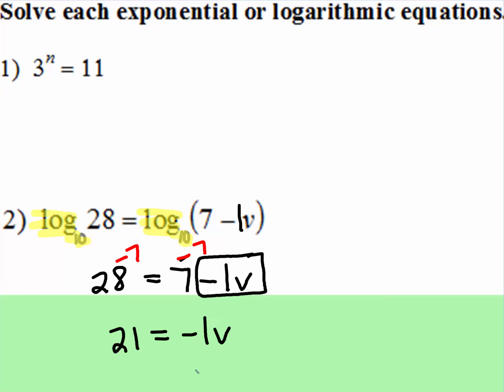Well, now I can get this by itself. Well, that's a positive 7. So I'm going to subtract 7 on both sides. And that leaves me with 21 is equal to negative 1v. Well, we're just going to divide both sides by negative 1. And that's v is equal to negative 21. And then you would need to type that in to make sure that's correct. 7 subtract negative 21 becomes 7 plus 21, which is 28. Yep, log base 10 of 28 is equal to log base 10 of 28. So that's correct.